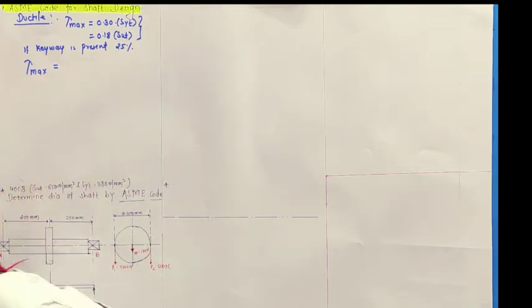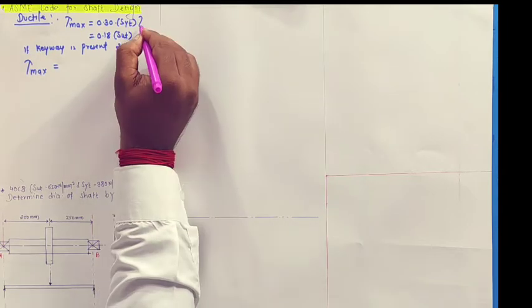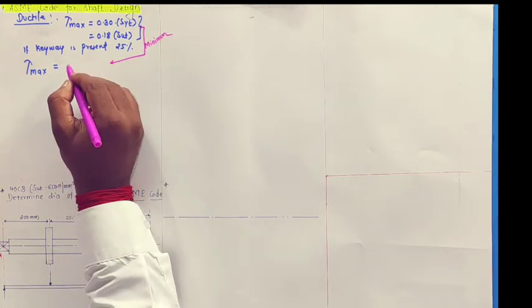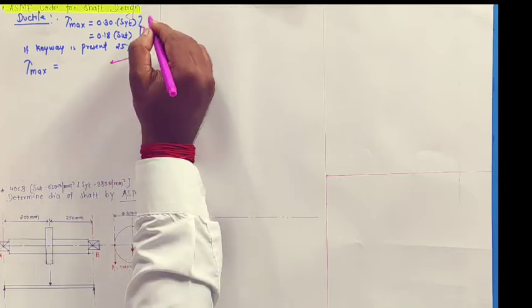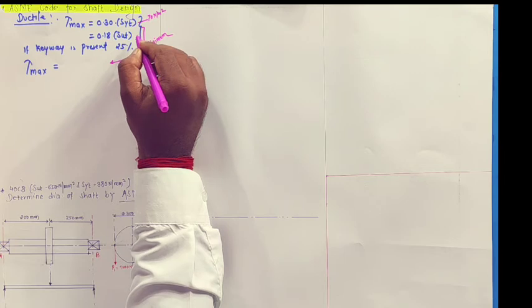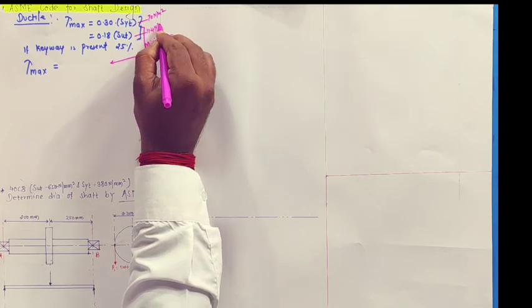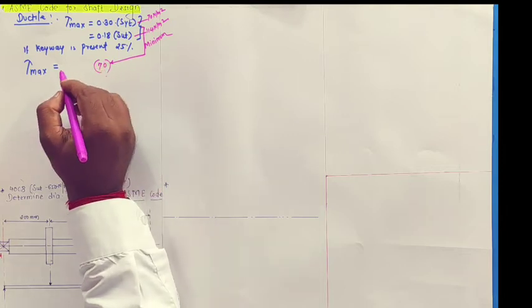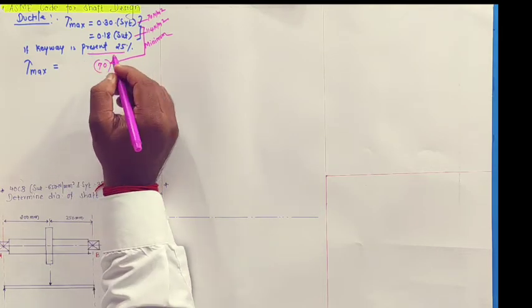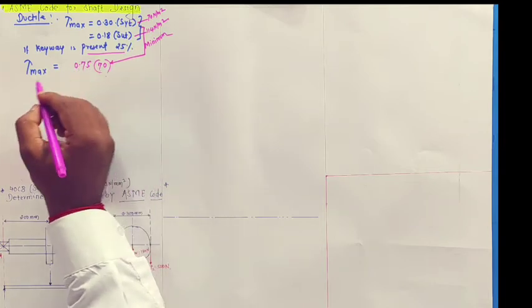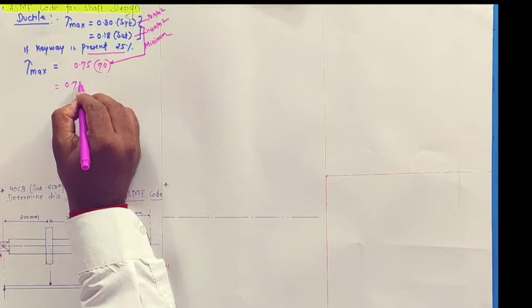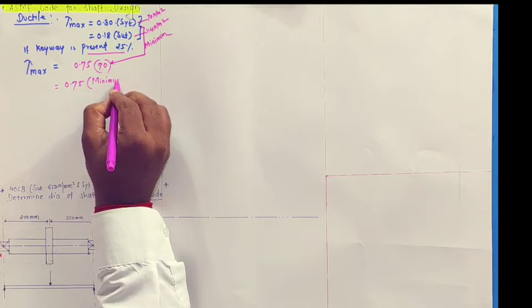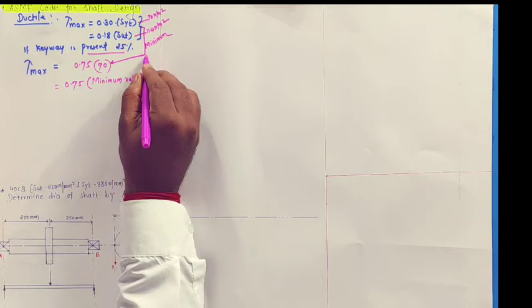Minimum of this. It means, minimum of this, I will have to write. Suppose this answer is 70 Newton per mm square, and this is 114 Newton per mm square. In that case, minimum is 70. So I will take 70 here for the multiplication, and tau max is equal to, it will reduce when keyway is present, that is 25%, so remaining is 75. So, our value is 0.75 percentage, and we will have to take minimum value of above 2.